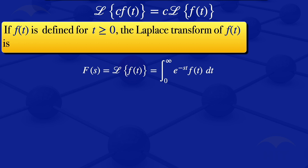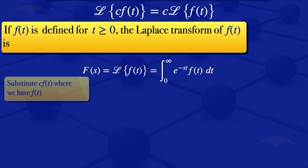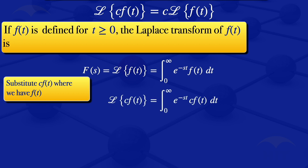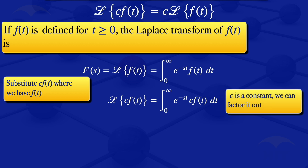In this case, we are finding the Laplace transform of C multiplied by F of T. So where we have F of T in the definition, we substitute C multiplied by F of T. We get that the Laplace transform of C times F of T equals the integral from zero to infinity of e to the minus ST times C times F of T dT. Since C is a constant, we can factor it outside the integral, giving C multiplied by the integral from zero to infinity of e to the minus ST times F of T dT.